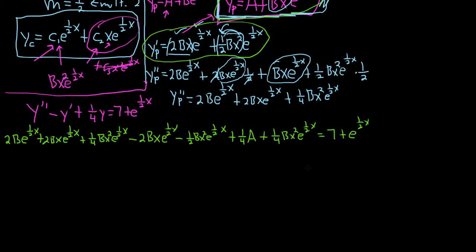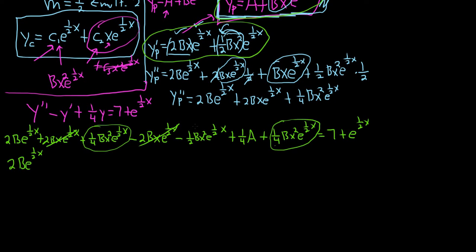This equals 7 plus e to the ½x. Looking at what cancels: the 2Bx e to the ½x terms cancel. For the x² terms: ¼ plus ¼ is ½, and it cancels with the minus ½ from the y prime term — they all go away. So we're just left with 2B e to the ½x plus ¼A equals 7 plus e to the ½x.